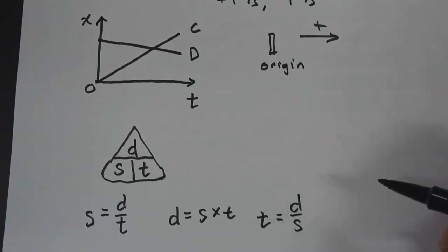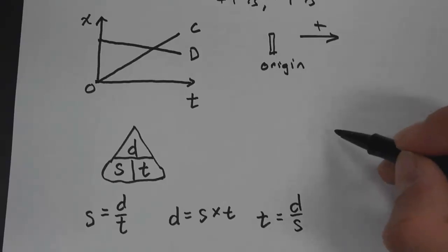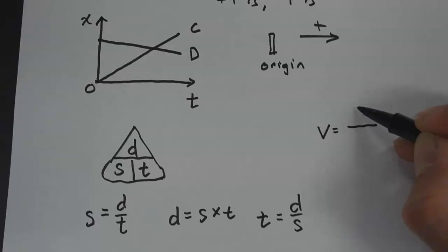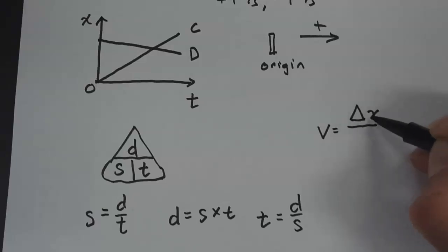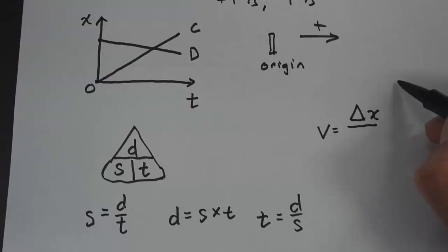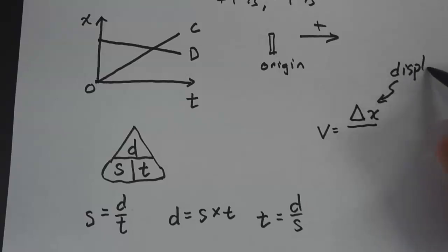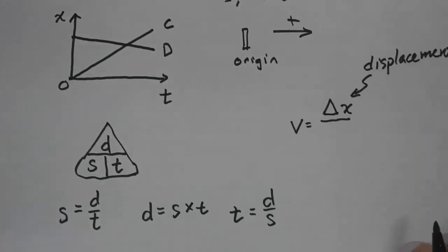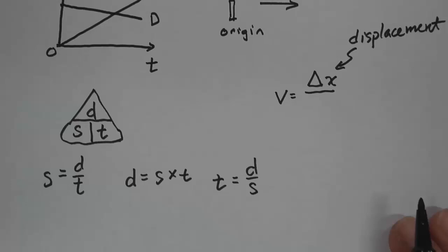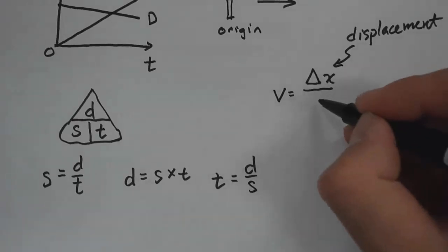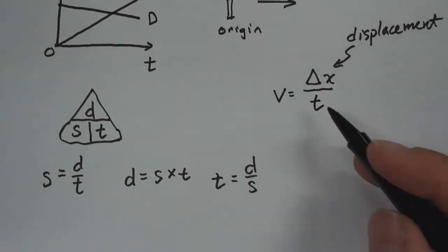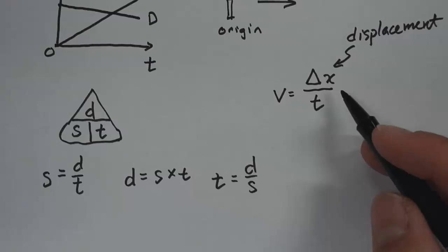For velocity, the equation is a little different. Velocity is equal to displacement — the symbol is delta X, like a triangle X — divided by time. Displacement is the change in position, so velocity is the rate at which your position changes.